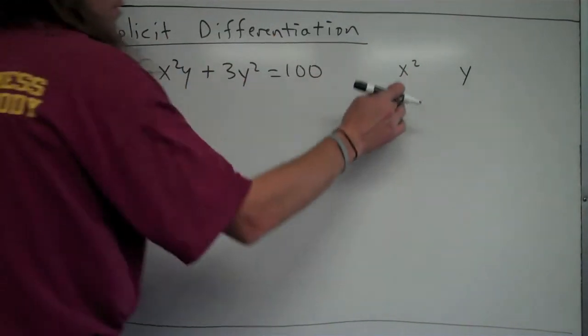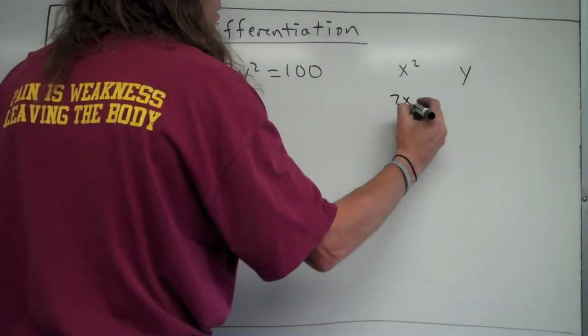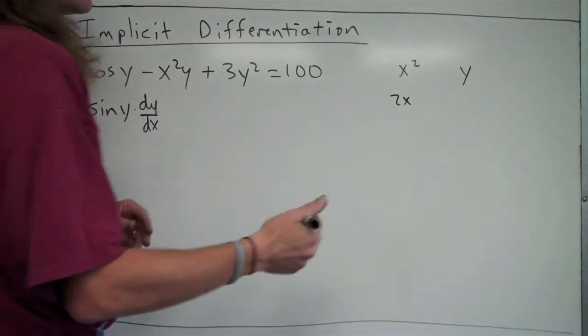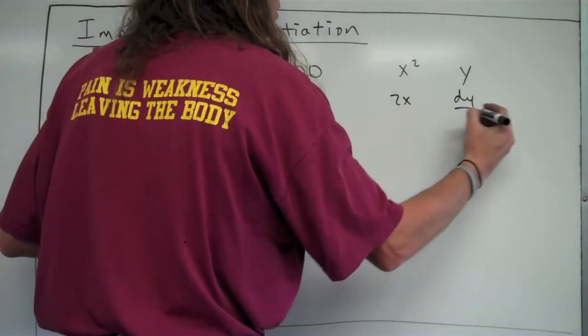And what we need to do is figure out the derivative of x squared is going to be 2x. The derivative of y is just 1 times dy over dx, so it's just going to be dy over dx.